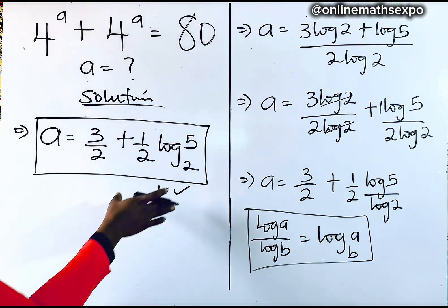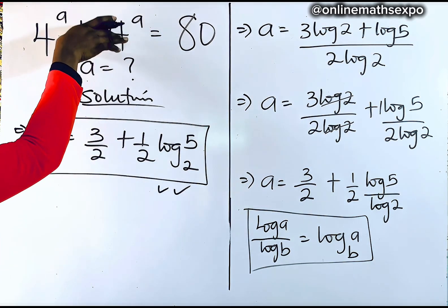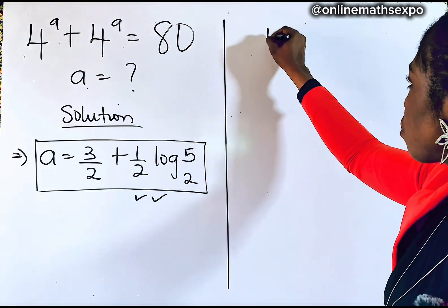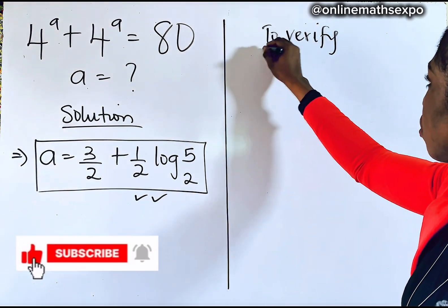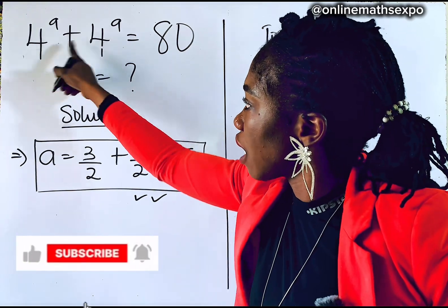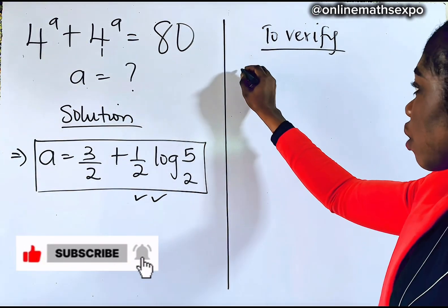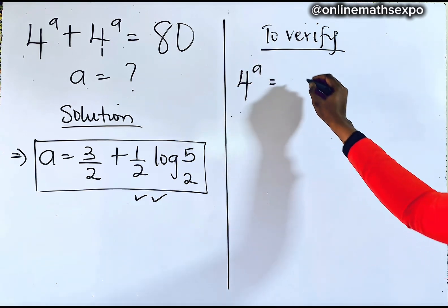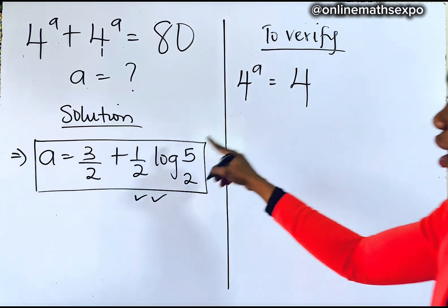We are going to do a little check — plug this value of A back in to see if it gives us 80. To verify, we work with the first term. Since they are the same, when we are done we will return both. So we are going to evaluate 4 to the power of A, which is 4 to the power of 3 over 2 plus one-half log 5 base 2.